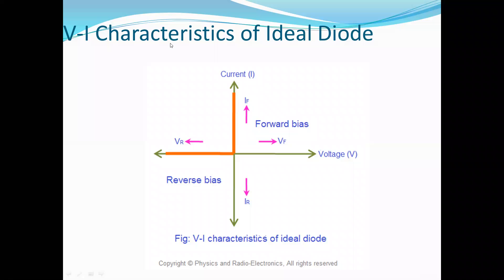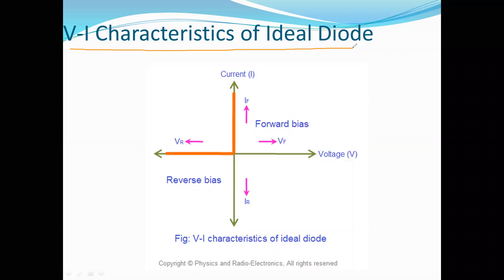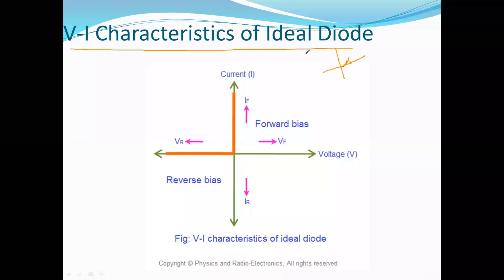Now we look at the characteristics of an ideal diode versus a practical diode. In a practical diode, the current is exponentially related to the input voltage, and there is a cut-in voltage due to the depletion layer. In an ideal diode, as soon as forward bias is applied, large current flows. In reverse bias, the ideal reverse saturation current I0 should be zero. That is why we prefer silicon — it has a lesser reverse current compared to germanium.